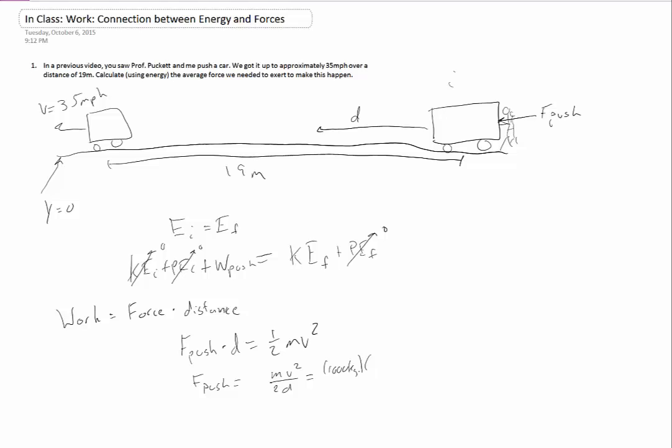In this problem, I asked you to use the number of 35 miles per hour, which is about, you know, around, let's say, you know, 18 meters per second or so. That's definitely not how fast we got that thing going. We couldn't have gotten it going much over 10 miles per hour, but I'll use the numbers I asked you to use in the problem.